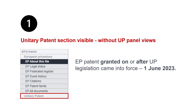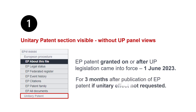The section will appear inactive as long as there is no request for unitary effect during the first month after the publication of the date of grant in the European Patent Bulletin, or during the 2-month period for the re-establishment of rights. In a nutshell, the Unitary Patent section will be visible and inactive for 3 months after the publication of the EP Granted Patent, provided there is no request for unitary effect.